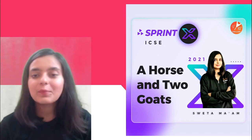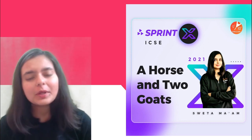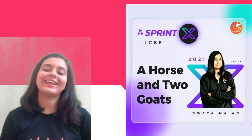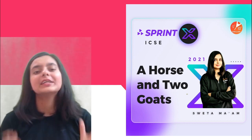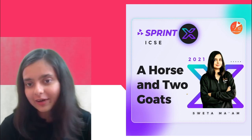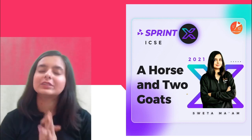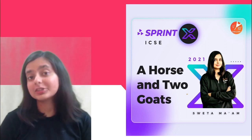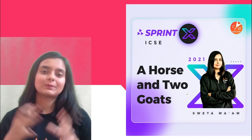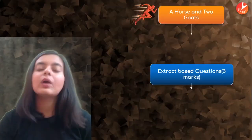Hello students, welcome to Sprint X ICSC. This is Shweta Roy, your English master teacher at Vedantu. Hope all of you are doing amazing. Today the story we're going to cover is a humorous story by R.K. Narayan — 'A Horse and Two Goats.' The basic theme is cross-cultural difference and the humor arising out of that. If you've missed previous lectures on this chapter, I'd suggest you go watch those videos first, where the entire chapter has been explained.